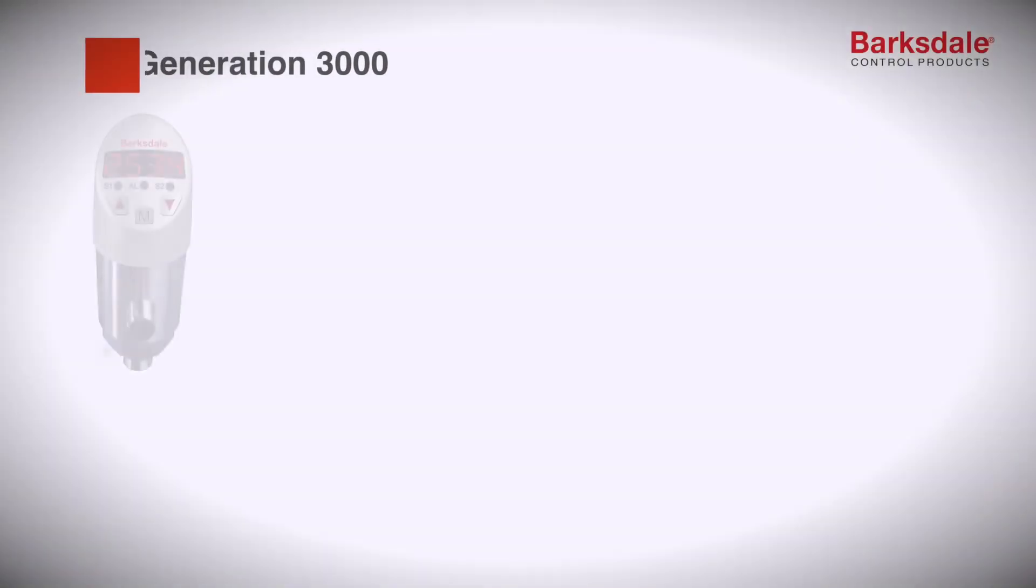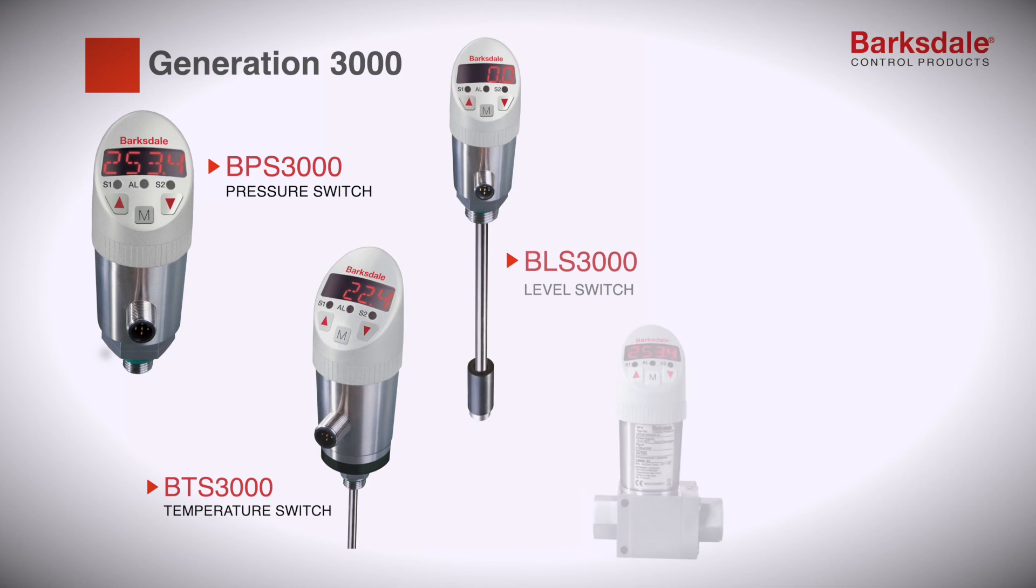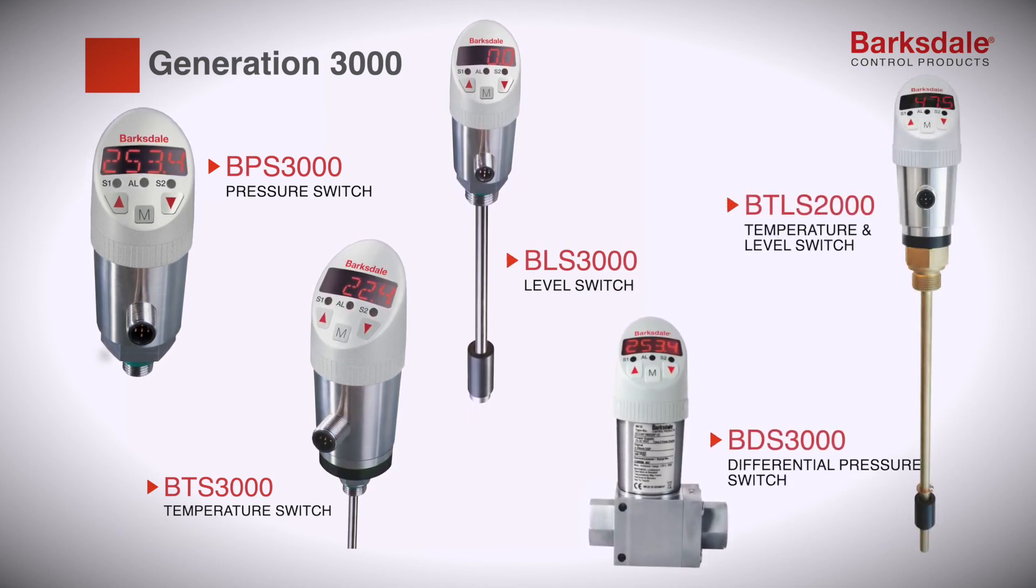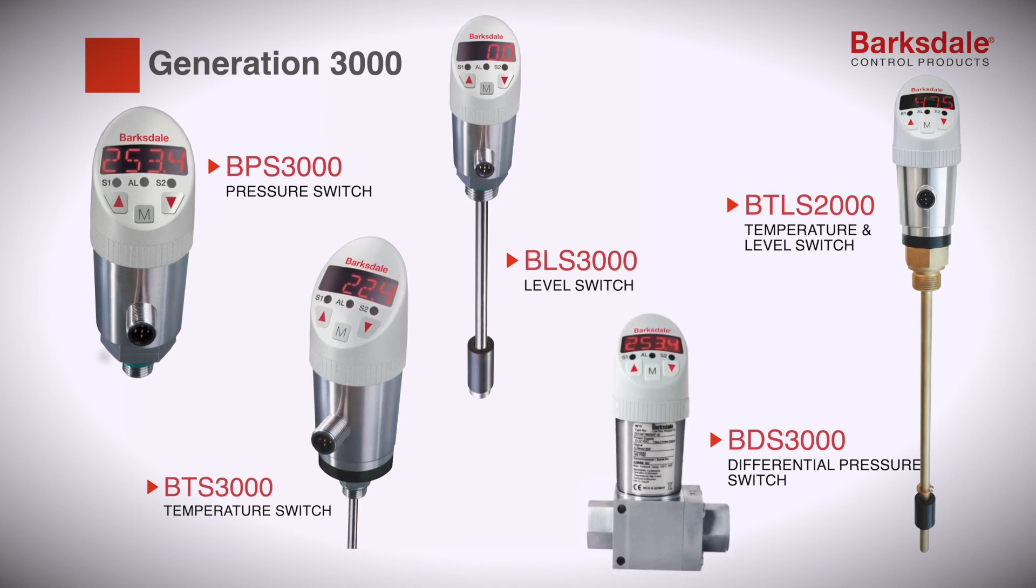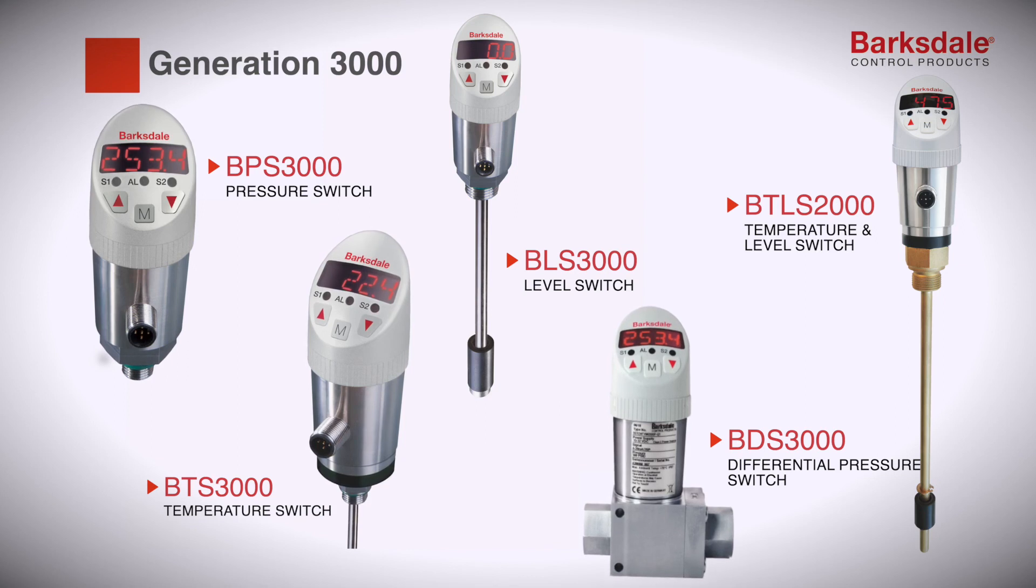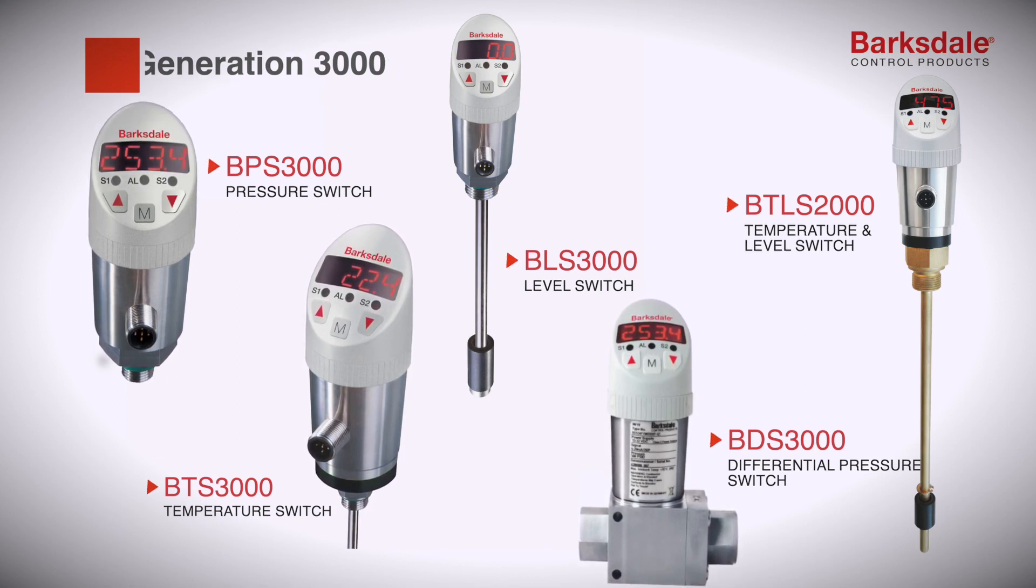Generation 3000 also comes with temperature, level, and differential pressure variants. The Barksdale control product covers the full range of portfolio with BTS 3000 for temperature, BLS 3000 for level measurement, BDS 3000 for differential pressure, and BTLS 2000 for both temperature and level.